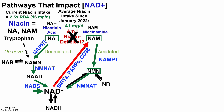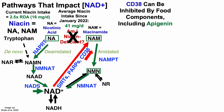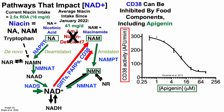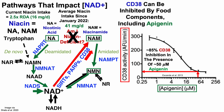Alternatively, NAD can be degraded into NAM, in part by the enzyme CD38. Fortunately, CD38 can be inhibited by food components including apigenin. With CD38 activity on the y-axis plotted against the concentration of apigenin on the x-axis, at about 50 micromolar of apigenin, CD38 activity is about 85% inhibited.